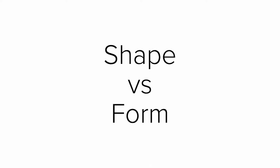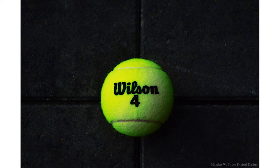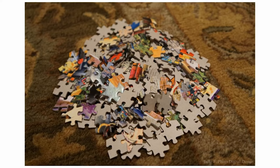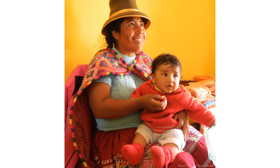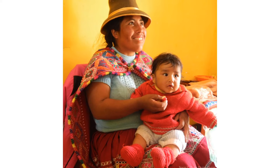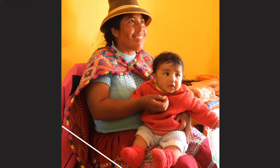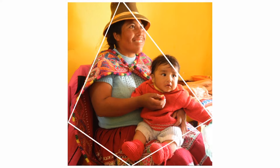It is important not to confuse shape with another element of art — form — which is the three-dimensional aspect of objects. Photographers tend to discuss form more often since the items they shoot are usually three-dimensional in real life. To clarify: in this photograph, the people themselves are examples of three-dimensional form, and the patterns on her shawl and skirt are examples of two-dimensional shapes. But one could argue that the composition of the image makes an implied triangle or diamond shape.